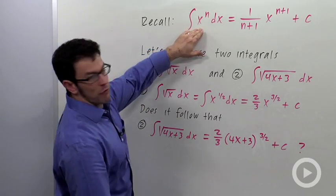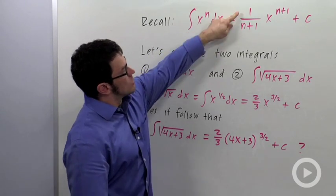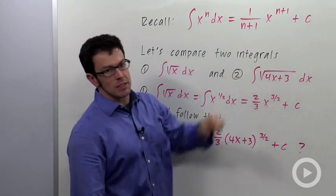First of all, recall the power rule for antiderivatives. The integral of x to the n is 1 over n plus 1, x to the n plus 1 plus c.